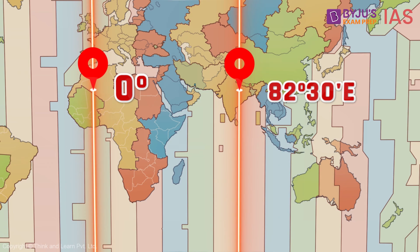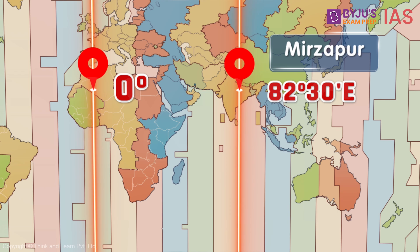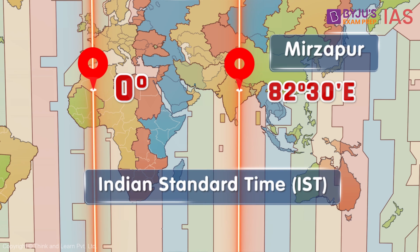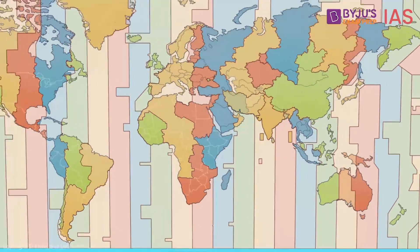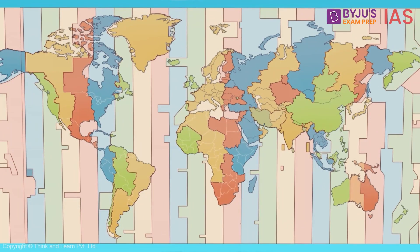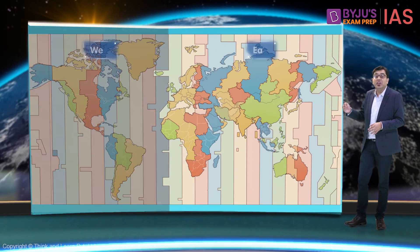For example, the standard meridian of India has a longitude of 82 degrees 30 minutes East. This standard meridian passes through Mirzapur in Uttar Pradesh and is considered the standard time for the whole country. This means all of India follows the local time of this longitude, which is 5 hours 30 minutes ahead of Greenwich time, or GMT.